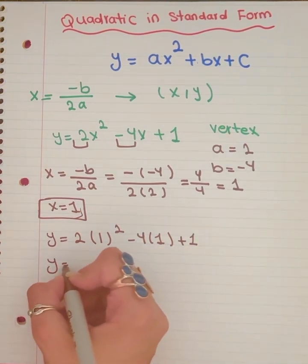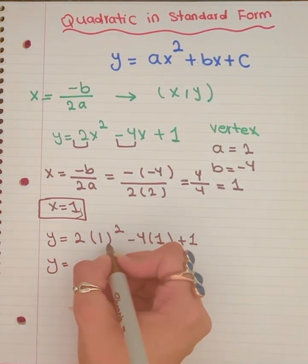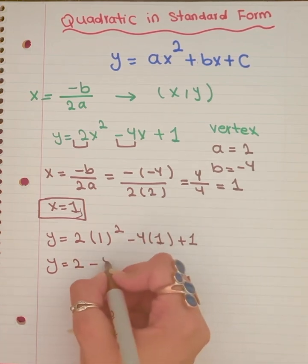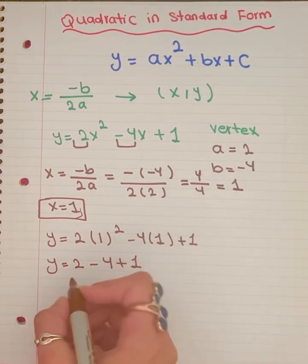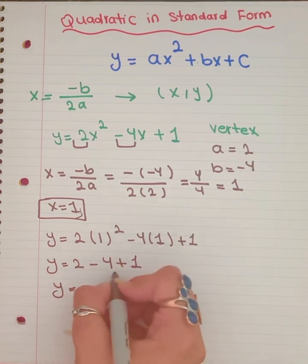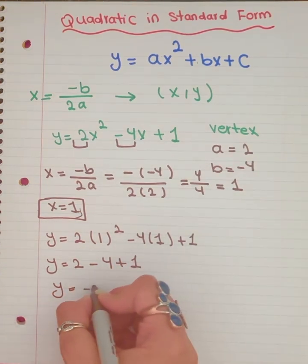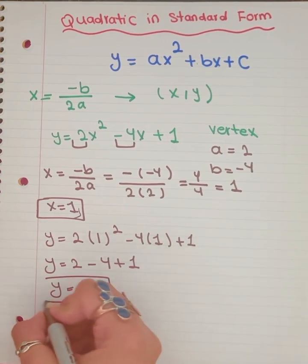y equals 1 to the power of 2 is 1. 1 times 2 is 2 minus 4 times 1 is 4 plus 1. y equals 2 minus 4 is negative 2. Negative 2 plus 1 is negative 1. So our y equals negative 1.